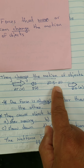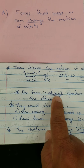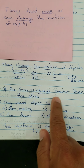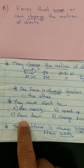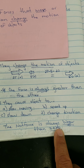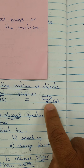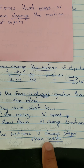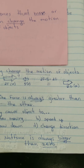Characteristics of unbalanced forces: they change the motion of objects; one force is always greater than the other; they cause objects to start moving, speed up, slow down, or change direction. The net force will never be zero — there's always going to be a net force. In that example, after subtraction the net force is 20, which is bigger than zero.